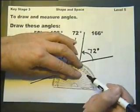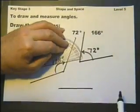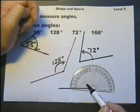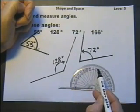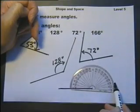Last one. 166. Put the protractor on that end again, I think. 40, 70, 90, 130, 150, 160, 166.